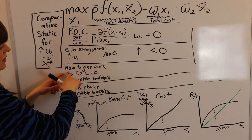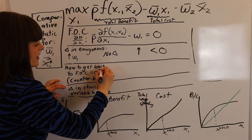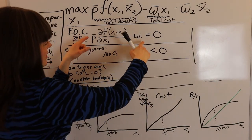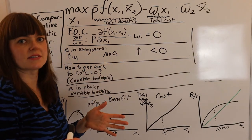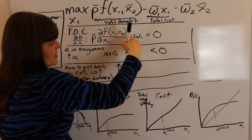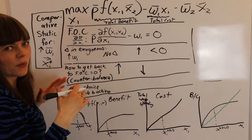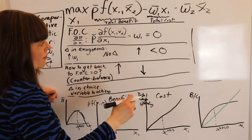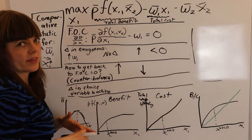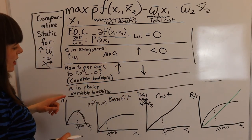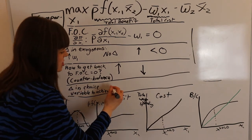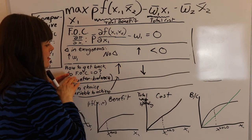We go to our next line — the counterbalance line — where we think about: the first order condition is now less than zero, so what are the different options for getting it back to zero? Either we can increase our benefit, or we can decrease our cost. These two options should always point in opposite directions to get us back to zero. We don't need to worry about achieving this yet — this row is just figuring out what we need to achieve with marginal benefit and marginal cost. Then we move to the final line: what change in our choice variable achieves these counterbalance conditions?